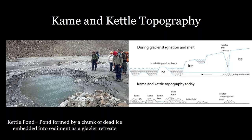Next we have kame and kettle topography. This is really prominent especially in newly exposed glacial landscapes, and it's one of the reasons why periglacial regions have so many lakes. A kettle pond is a pond formed by a chunk of dead ice embedded in sediment as the glacier retreats. Dead ice is ice that's been disconnected from the glacier and just sits there until it melts. That ice can be so large that it displaces a large amount of sediment, and when it melts it forms a depression — like this one I photographed in Denali National Park at the Toklat River Gorge. That is called a kettle pond or kettle lake.